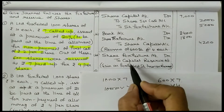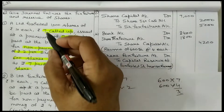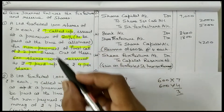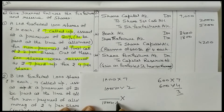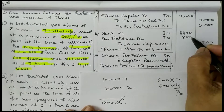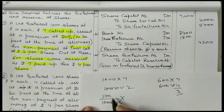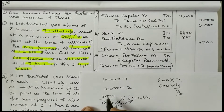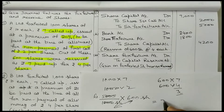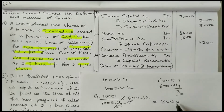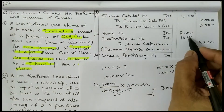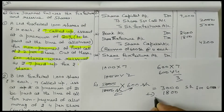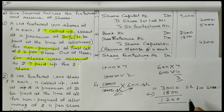Share forfeiture account is debited to capital reserve. If fewer shares are reissued than forfeited, apply the formula. On 1000 shares the forfeiture amount is ₹5000. Reissued shares are 600, so on 600 shares the share forfeiture credit amount is ₹3000. Loss on reissue of 600 shares is ₹1800. Deduct ₹1800 from ₹3000, so ₹1200 is transferred to capital reserve.